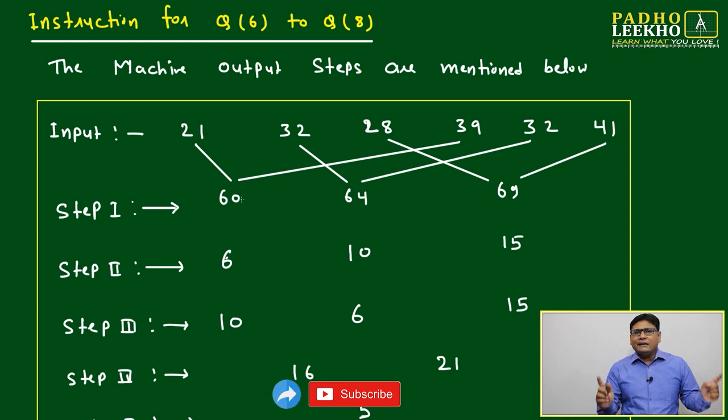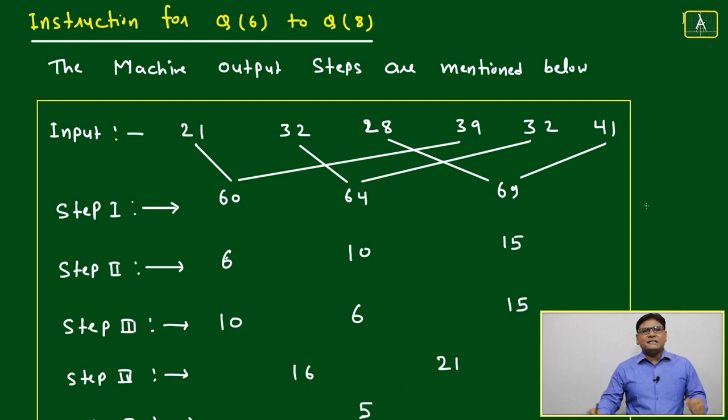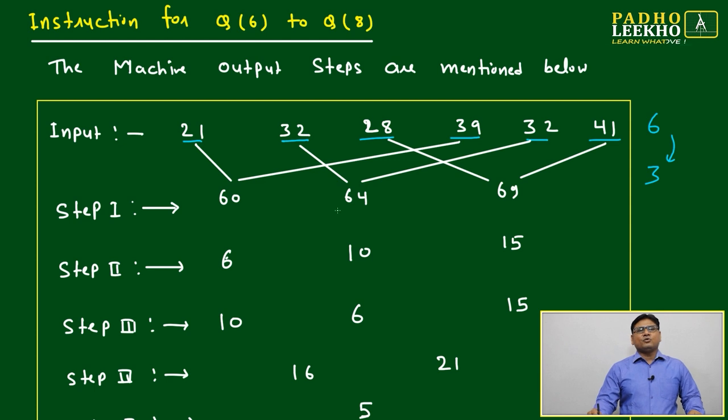Step 1 we are adding two numbers and making one number. Six elements we are converting into three elements. 21 will be added with 39, 32 will be added with 32, and 28 will be added with 41. We will get 60, 64, 69.